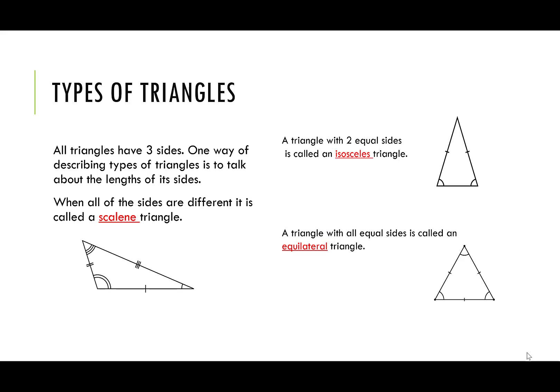All triangles have three sides. One way of describing types of triangles is to talk about the lengths of the sides. When all of the sides are different, it is called a scalene triangle. A triangle with two equal sides is called isosceles. A triangle with all equal sides is called equilateral.